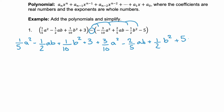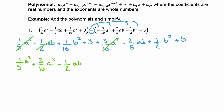Now that we've distributed and removed the parentheses, we want to start combining the like terms. The best way to do this is to put like terms near each other. We'll start with the a squareds: 1/5 a squared and 3/10 a squared. Then negative 1/2 ab and negative 2/5 ab. Then we have b squareds: 1/10 b squared and 1/2 b squared. And then our constants: plus 3 and plus 5.